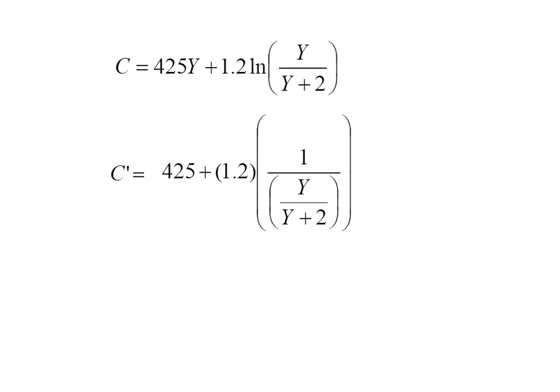So taking my first derivative, that 425y becomes 425. I'm going to recopy that 1.2 and I multiply it by 1 over whatever was in my natural log expression's parentheses. So in this case I have 1 over y over y plus 2.